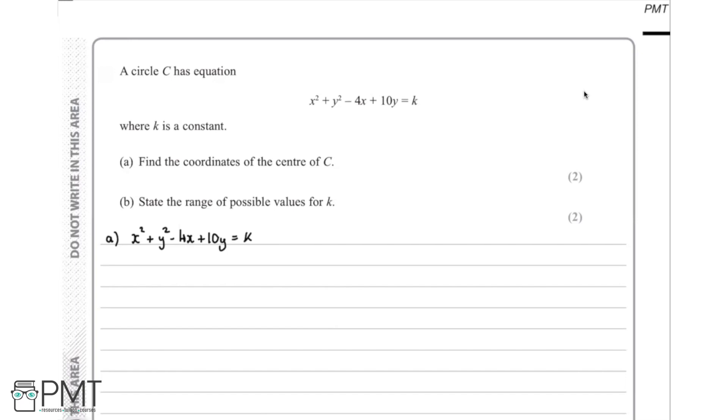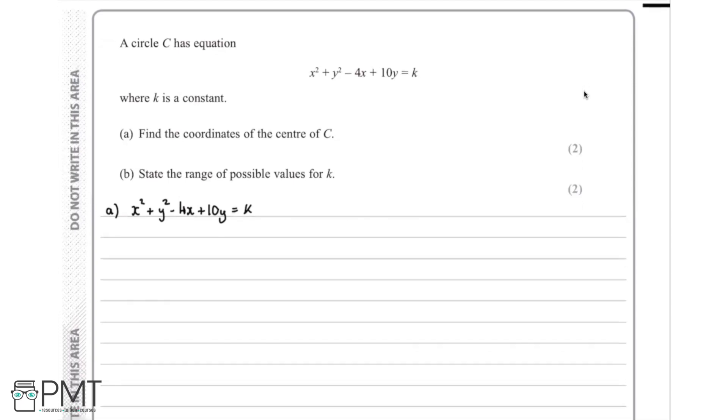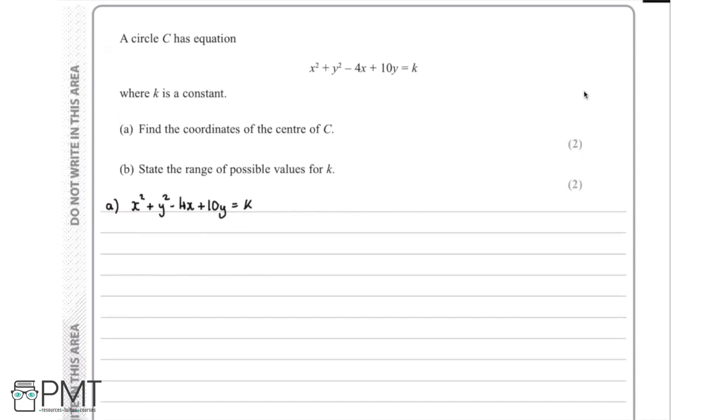For part A of this question, we're asked to find the coordinates of the center of the circle C. So what we're going to do here is get the equation of the circle into a form where we can read the center from it. To do this, we'll rewrite the equation grouping together the x terms and the y terms. So we'll have x squared minus 4x plus y squared plus 10y is equal to k.